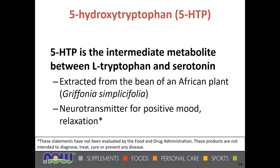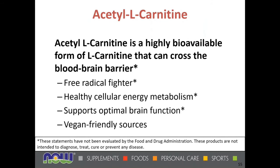5-HTP, also known as 5-hydroxytryptophan, is the intermediate metabolite between L-tryptophan and serotonin. It is extracted from the bean of the African plant known botanically as Griffonia simplicifolia. Serotonin is an important neurotransmitter for positive mood and relaxation. Acetyl-L-carnitine is a highly bioavailable form of L-carnitine that is able to cross the blood-brain barrier, supporting not only free radical fighting and healthy cellular energy metabolism, but also optimal brain function. Vegan-friendly sources are available.